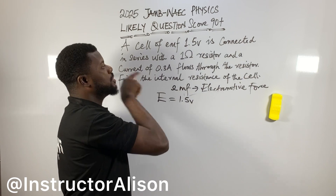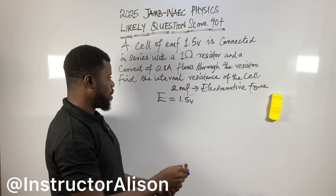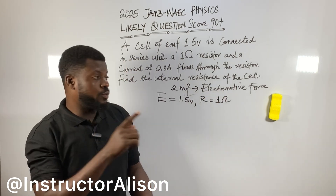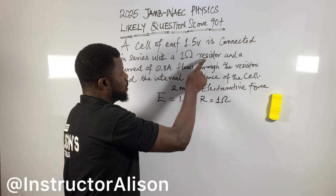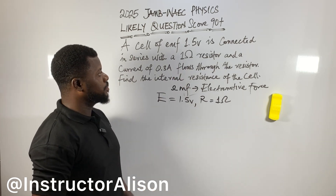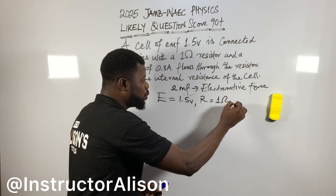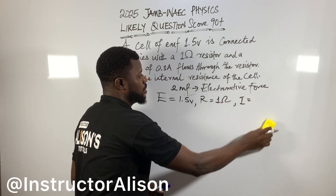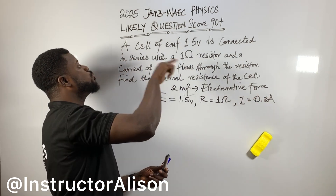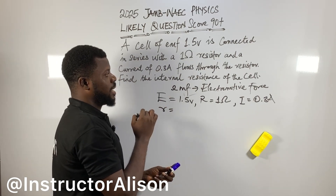Now it's connected in series with a one ohm resistor. The unit for resistor is in ohms. Capital letter R is equal to one ohm. They give us the resistor, which will be connected in series to this EMF — now one ohm. And a current of 0.3 ampere — current represented by I — flows through the resistor. Find the internal resistance — internal resistance, now you can use capital letter r of the cell.